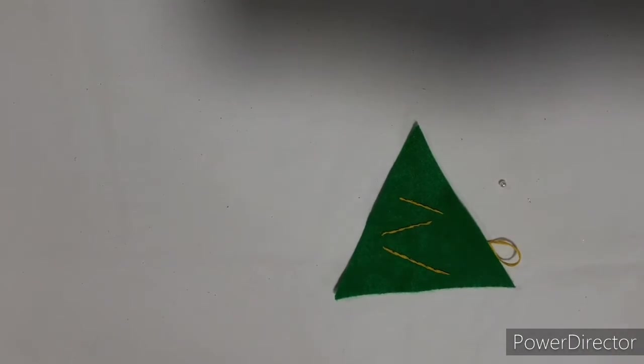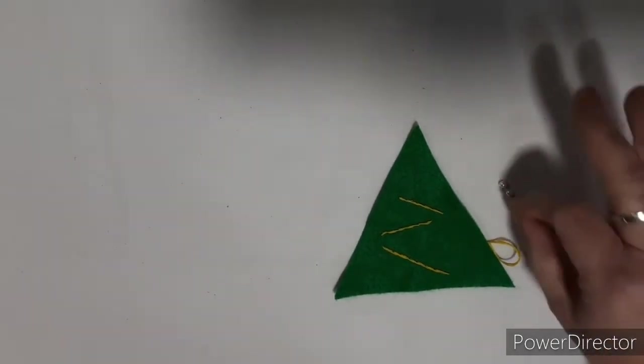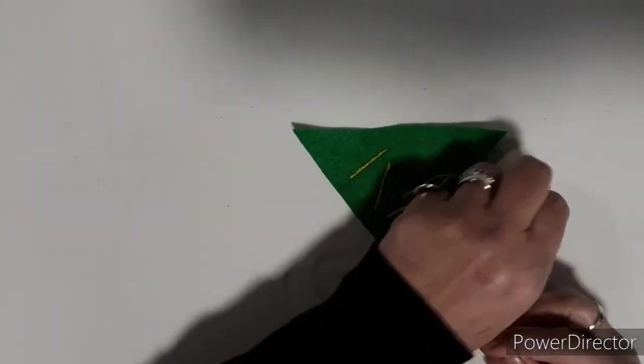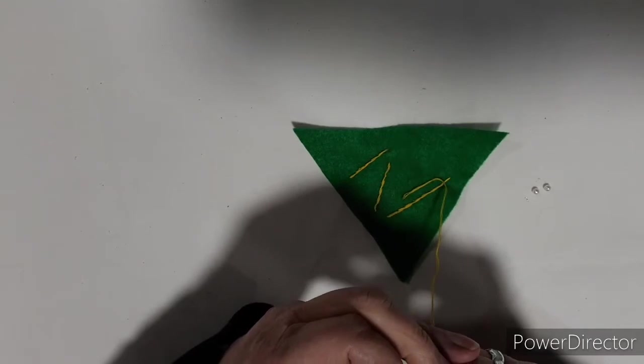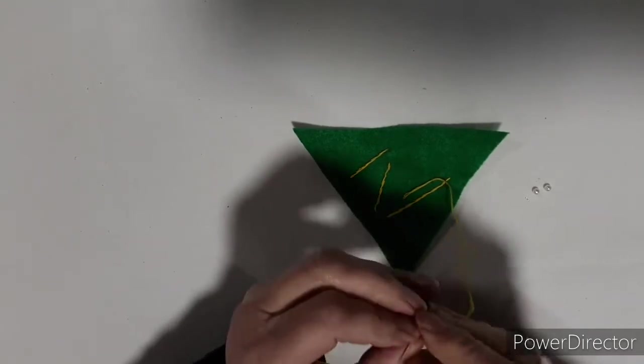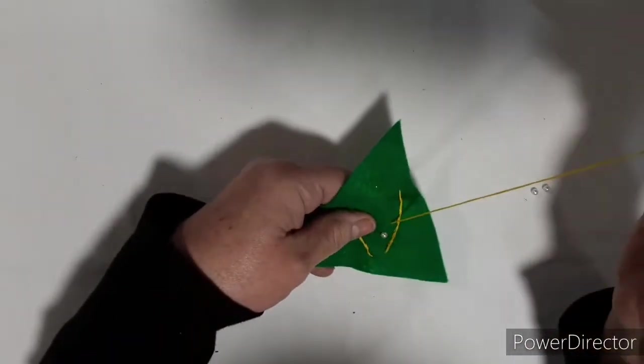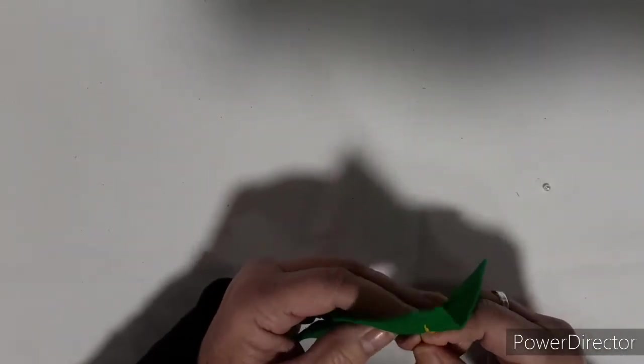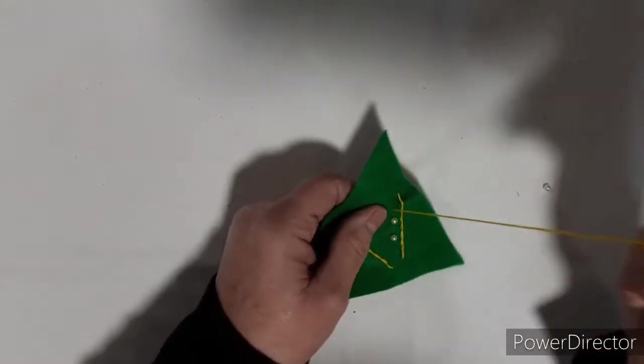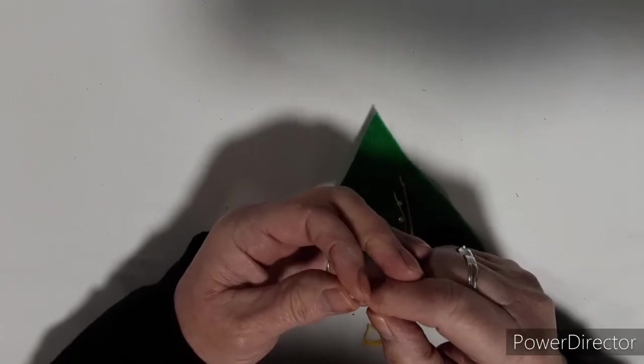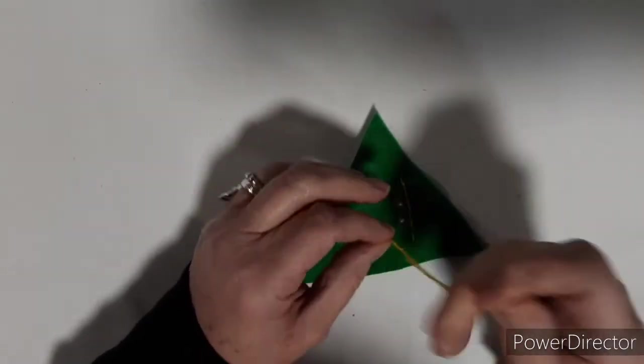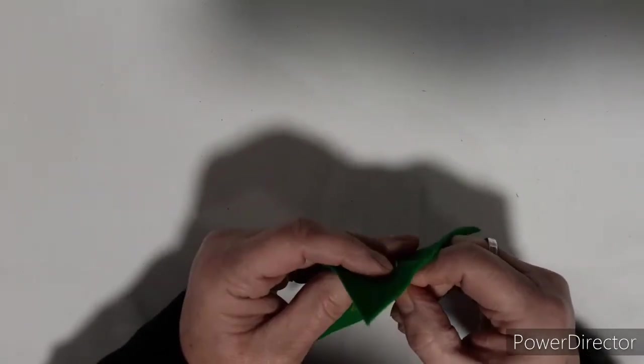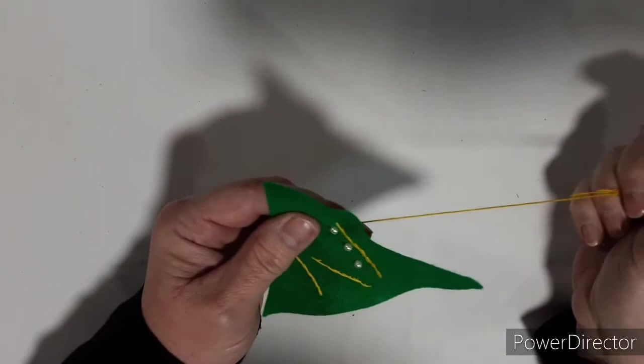So the next thing we'll do, we'll add some baubles to our tree. Get our little beads ready. Then we need to take a bead and thread it onto the needle and pull down the thread. Then we'll make a stitch through the back of the felt to secure the bead. Do the next one, thread it through, through the felt and up. Then we'll do the last one. Back through and secure it into place.